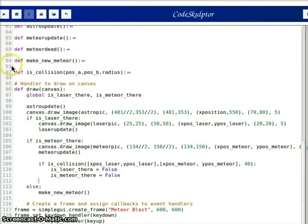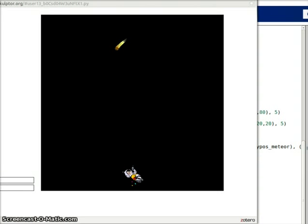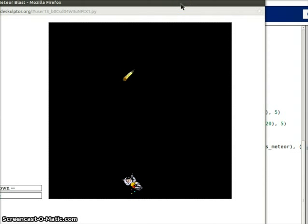Let's see this in action. Now I see this meteor dropping down and if I go under it and press the arrow key up it should hit it and both vanish and a new meteor shows up so we can go over there and shoot it.